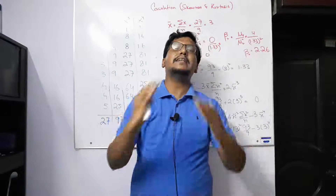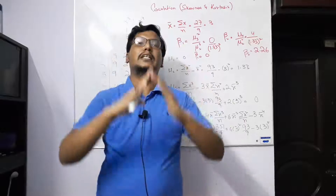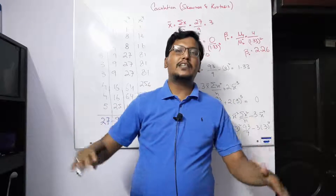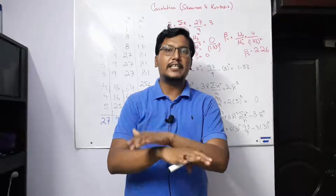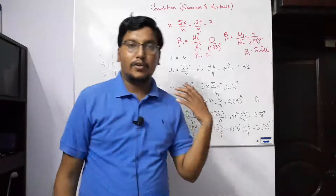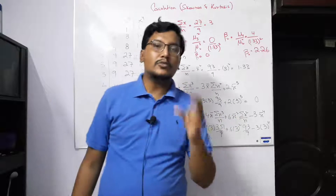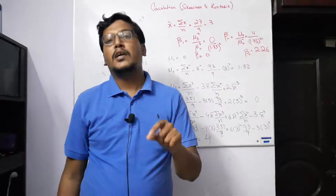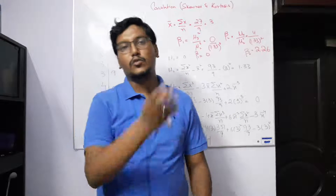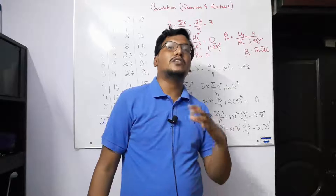Kurtosis describes the peakness and flatness of data. If the data is highly peaked, this is called leptokurtic. If moderately peaked, this is called a normal curve or mesokurtic. If the data is very flat, this is called platykurtic. For kurtosis we calculate beta 2: if beta 2 equals 3, that is called mesokurtic or the normal curve. Greater than 3 tends towards leptokurtic, and less than 3 means platykurtic. So beta 1 and beta 2 are most important to find out the shape of the data.